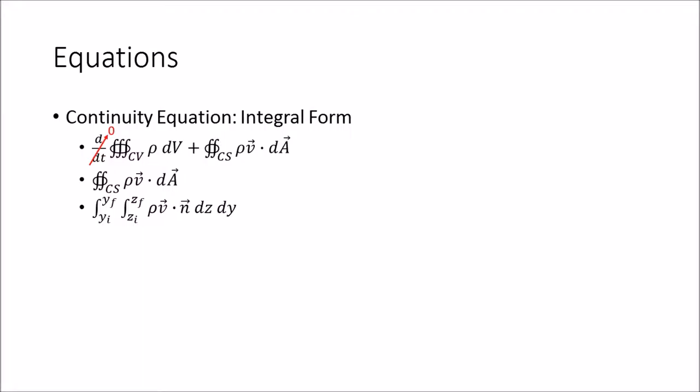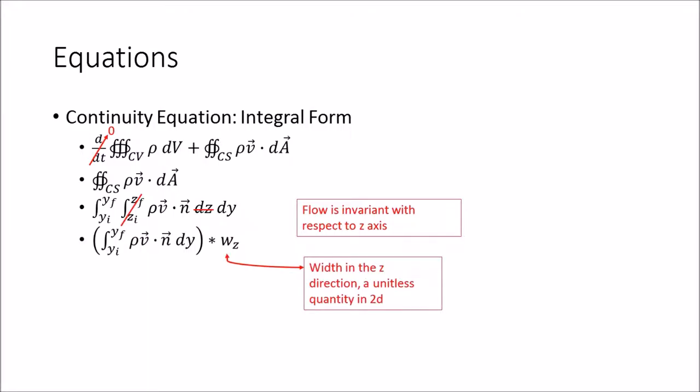We can expand this equation as we will be assuming a 2D example for our continuity equation. The flow will travel through a duct from left to right. The y-axis will be up and down along your screen and the z-axis will be in and out of the screen. We will assume the duct is symmetrical along the z-axis with no changes along that axis. Under this assumption, the z part of the integral simplifies, leaving us with only the width in the z direction, which will simply equal one as we are doing a 2D example.